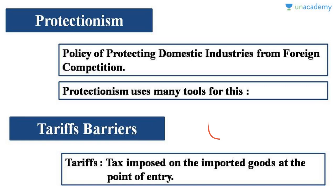One of the most widely used methods of protectionism is tariff barriers — tariffs are taxes imposed on imported goods at the point of entry. When tax is imposed on an imported good, its price will rise. Suppose before importing, the price of a good is 100 rupees. If the government imposes a tax of 50%, its price becomes 150. This is a direct method of discouraging international trade.